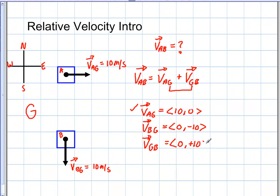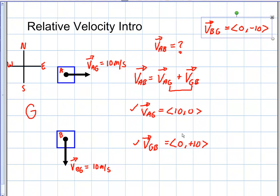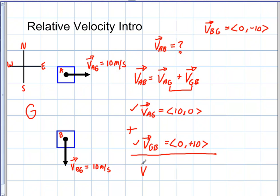Now we add up the velocity of A to G (which is 10i + 0j) and the velocity of G to B (which is 0i + 10j). Adding the components gives us the relative velocity of A with respect to B: 10i + 10j.